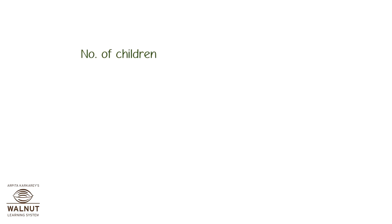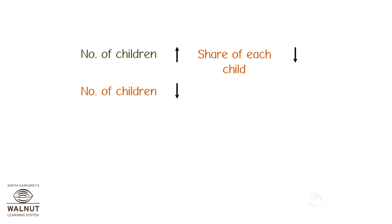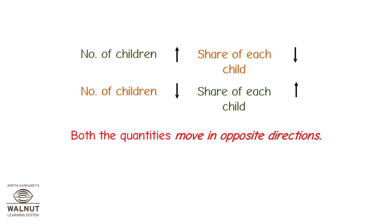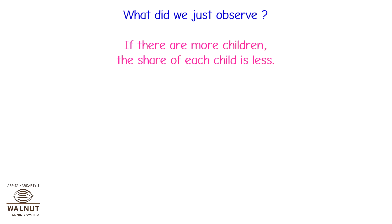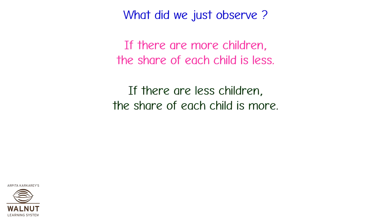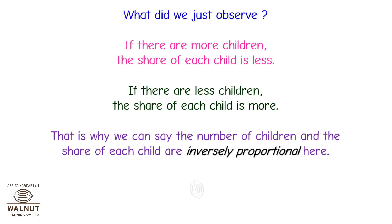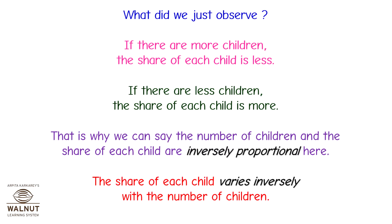When the number of children is increasing, the share of each child is decreasing. When the number of children is decreasing, the share of each child is increasing. Both quantities move in opposite directions. That is why the number of children and the share of each child are inversely proportional — the share of each child varies inversely with the number of children.